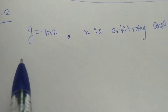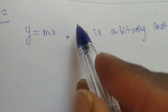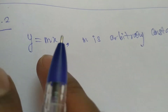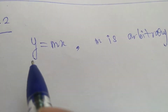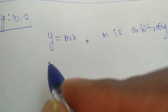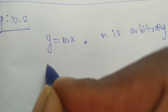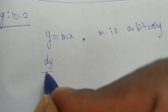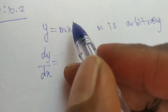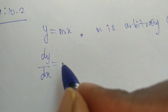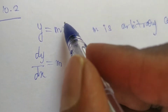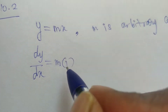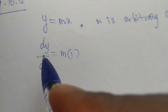We will differentiate the equation with respect to x to eliminate the arbitrary constant. Differentiating y equal to mx, since m is a constant and the derivative of x is 1, we get dy by dx equal to m.